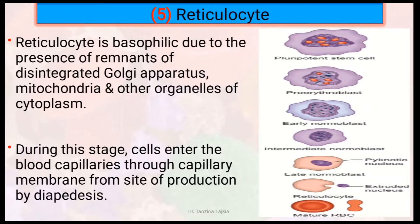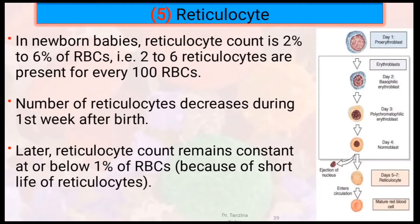During this stage, cells enter the blood capillaries through the capillary membrane from the site of production by diapedesis. In newborn babies, reticulocyte is 2% to 6% of RBC — that means 2 to 6 reticulocytes are present in every 100 RBC. The number of reticulocytes decreases during the first week after birth. Later, the reticulocyte count remains constant at or below 1% of red blood cells.